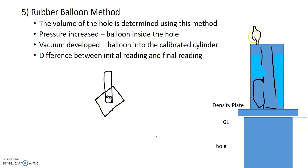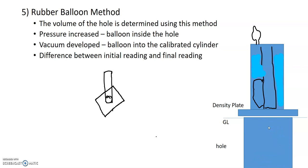We use the hand pump to get an initial reading. We dig the hole and place the density plate setup over the hole. When we apply pressure, the balloon expands and fills the hole. The balloon is inflated and covers the hole completely. The water content level in the calibrated cylinder can be clearly read.